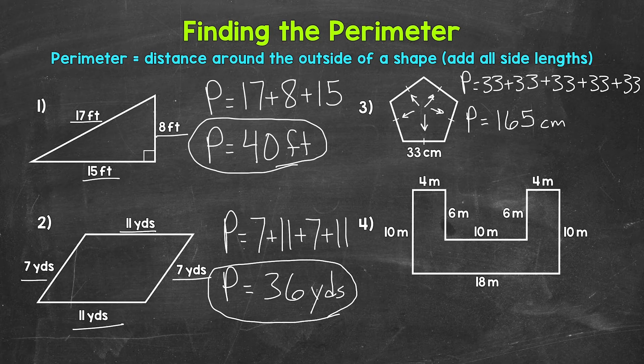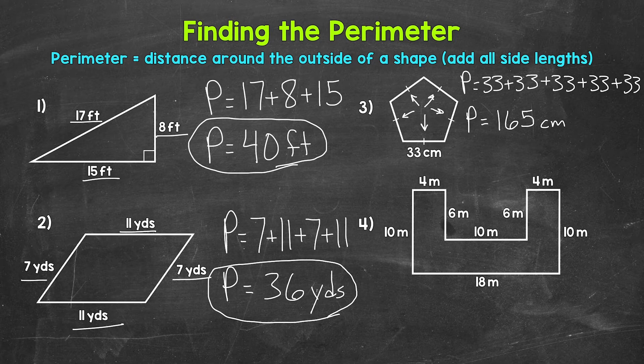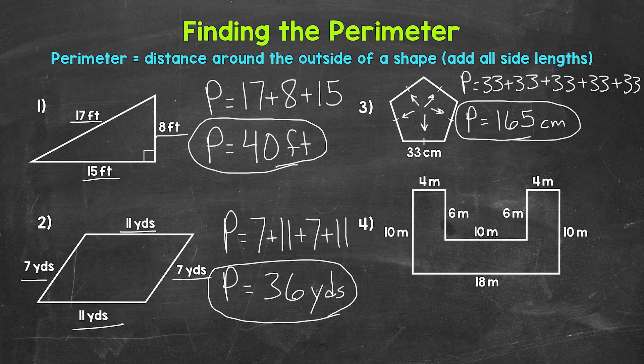And again, if we do 33 times 5, that will work. That will also give us 165. Either way will work. The perimeter of this pentagon, 165 centimeters.